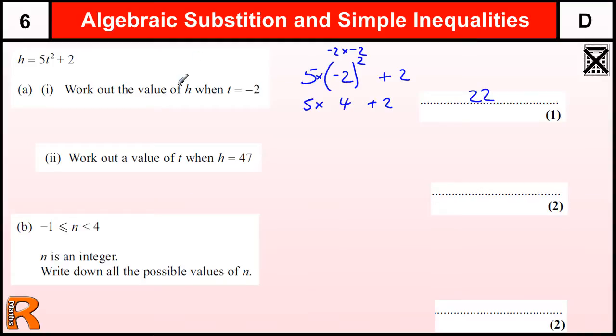The second one we actually get 2 marks. Because this is a trickier question, when you're starting with 47, which is H, equals 5T squared plus 2, we need to undo the things on this side to get back to T. So we need to take away the 2 to get 45 equals 5T squared.